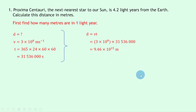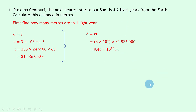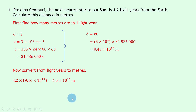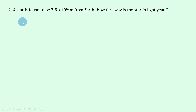You should get 9.46×10¹⁵ meters — that's the value for one light year in meters. Now all you need to do is multiply this by 4.2 to convert from light years to meters, giving a bigger number. So 4.2 × 9.46×10¹⁵ gives an answer of roughly 4.0×10¹⁶ meters.